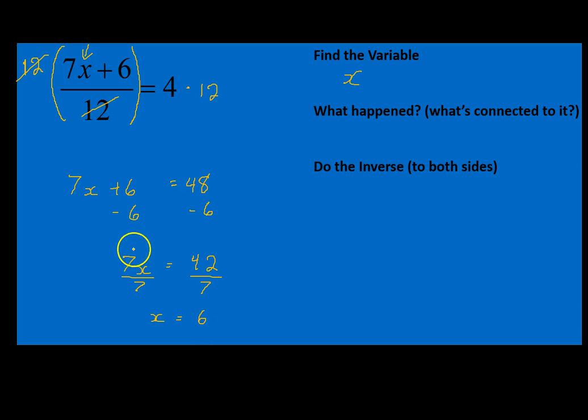Notice this one was 7 times x, so we did division to undo that. So with each of those steps, I'm trying to peel away the layers to get back to my variable. My variable is what we're looking for. When you're solving equations, you're trying to say, what is the variable equal to?